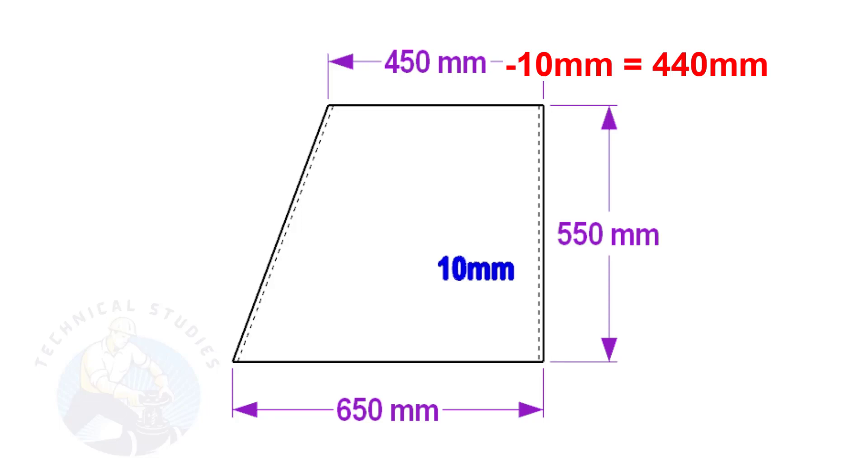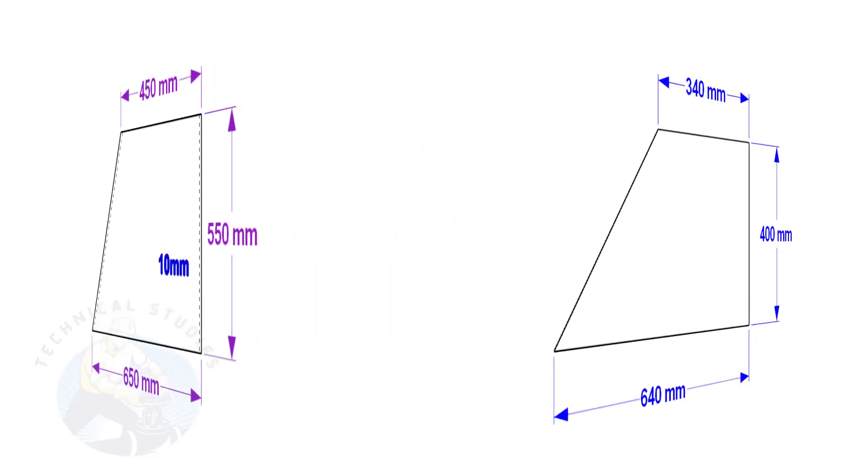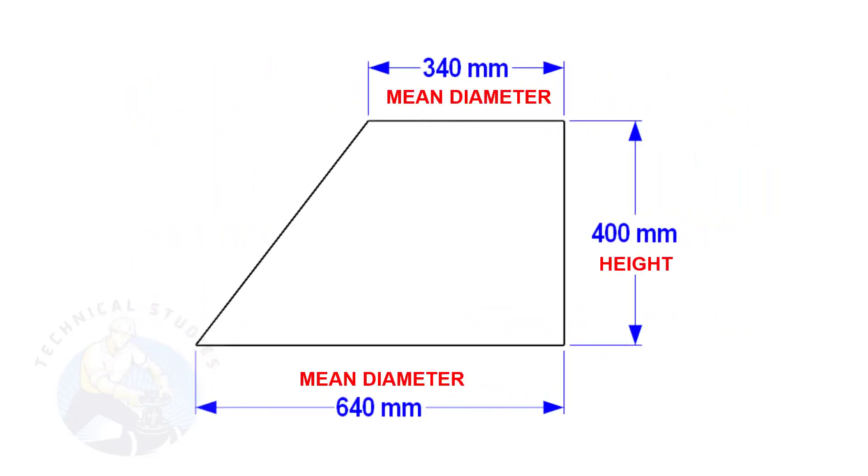Similarly, deduct 10 mm from 450 to get the mean diameter of the top side. In this layout, the bottom and top mean diameters are 640 mm and 340 mm respectively, and the height is 400 mm.